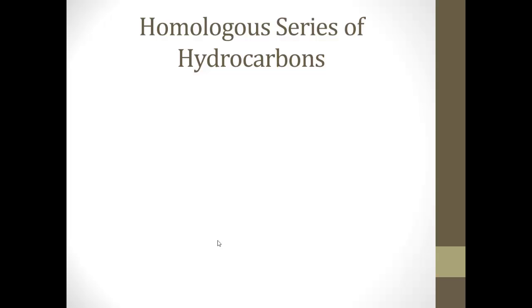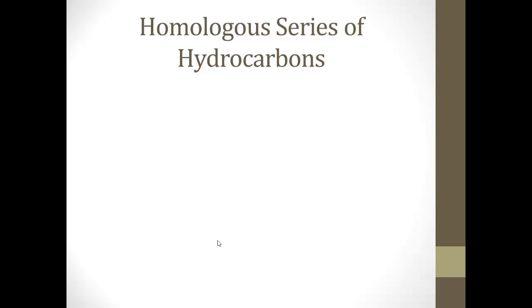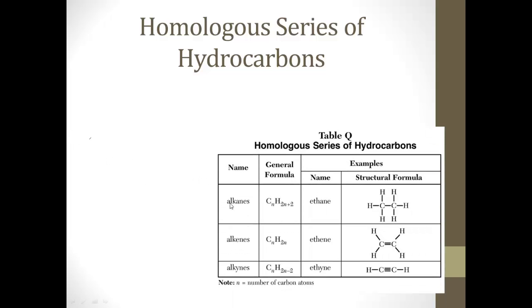Okay, so homologous series of hydrocarbons. Basically what that's going to be is our alkanes, alkenes, and alkynes. All right, now here, alkanes are going to have the general formula of CnH2n+2. So if it's C1, H would be 2 times 1 plus 2, so it would be CH4. If you have C2, H would be 2 times 2 or 4 plus 2, 6, and so on and so forth.